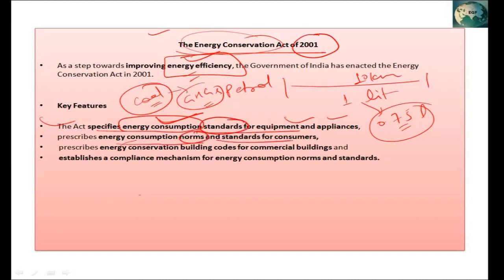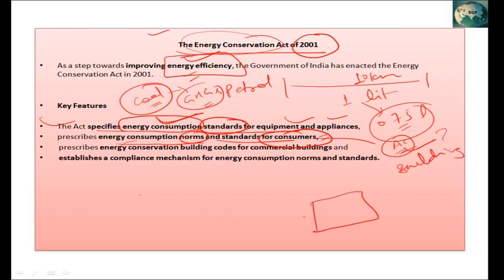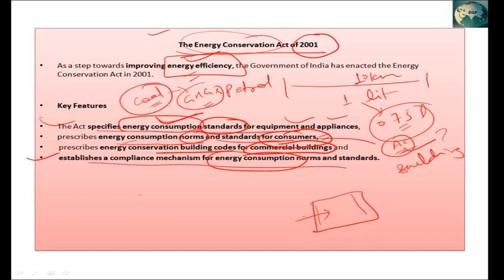The standard of energy consumption is also set for common consumers. For example, if we are using an AC, how much energy is being consumed by it? Similarly, building codes are made specifying what kind of building materials should be used so that heat and cold do not easily affect the interior, reducing the need for heaters and coolers. Commercial building codes are made to reduce consumption of energy, and that will happen when we develop advanced technology.